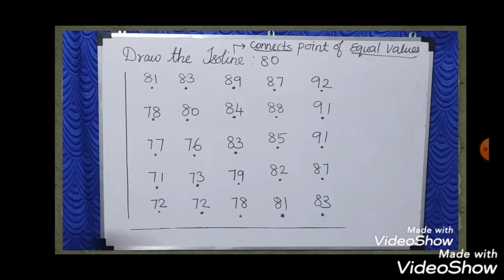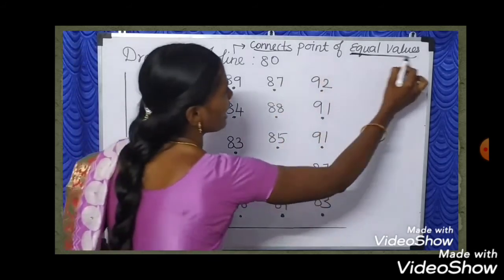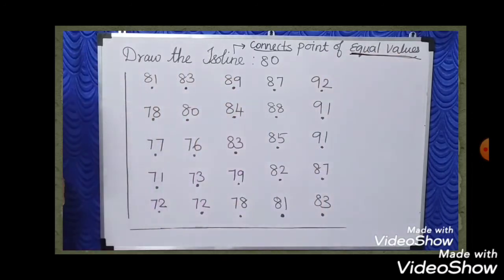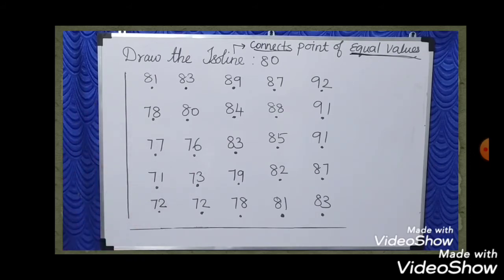Isolines. So, in weather and climate distribution, isolines are lines that connect points of equal values. We can draw the isolation lines and find different examples.